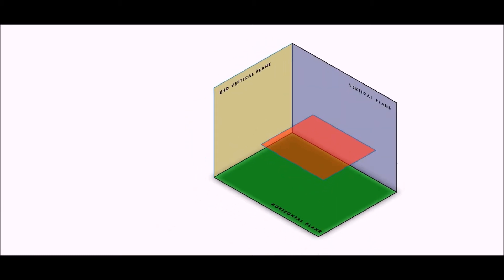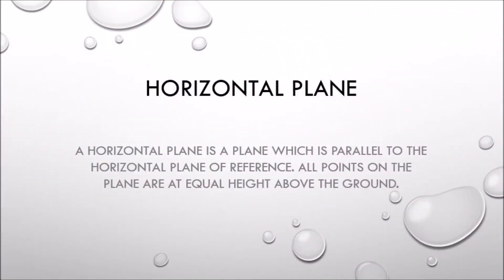A horizontal plane is a plane which is parallel to the horizontal plane of reference. All points on a horizontal plane are at equal heights above the ground.